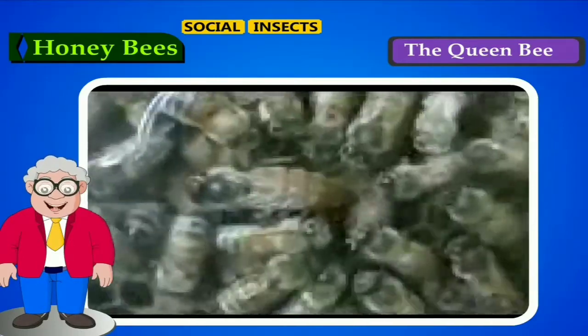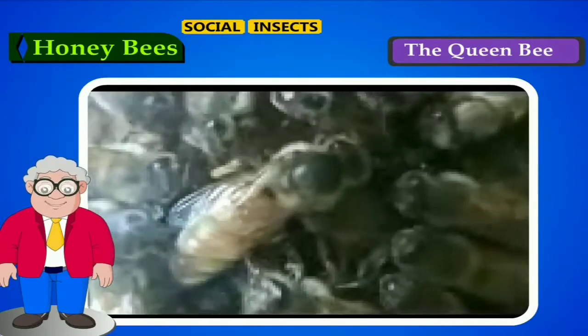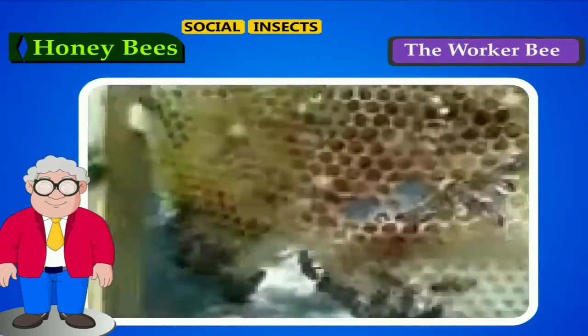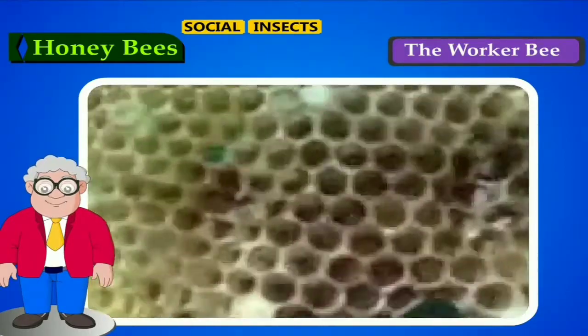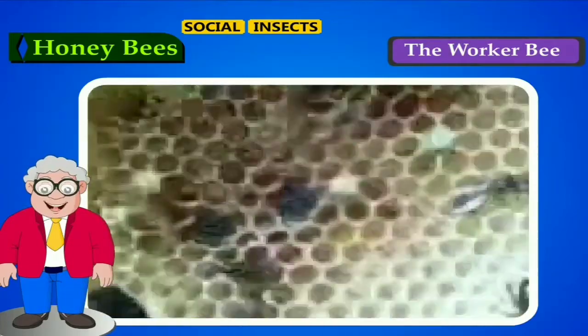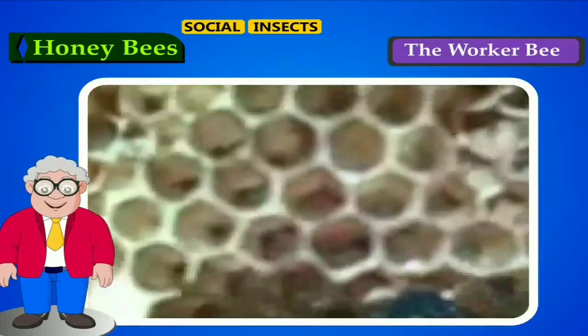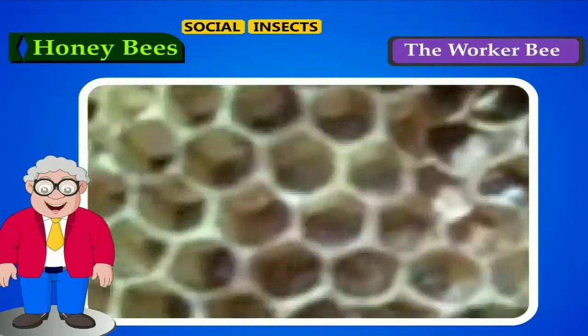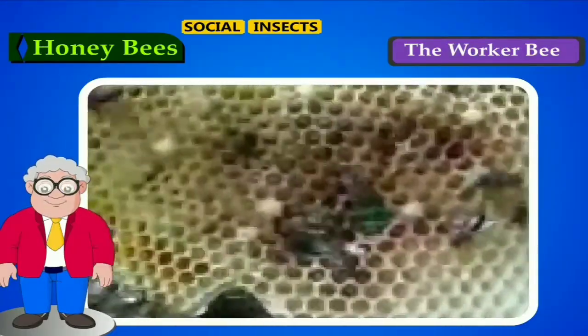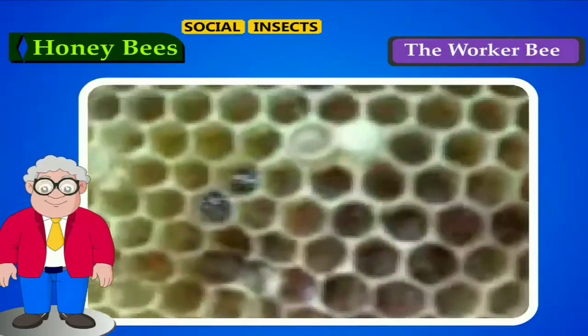Number 1: The queen bee. The queen is the only egg-producing female in the community and thus is the mother of all drones. Number 2: The worker bee. The worker bees are sterile females. They cannot mate or lay eggs. They do most of the work — they look after the larvae, secrete wax, build the honeycombs, gather nectar, pollen and water, convert the nectar into honey, clean the hive and also defend the hive.